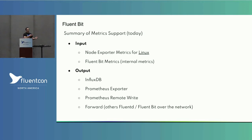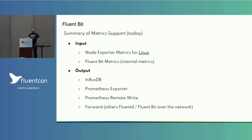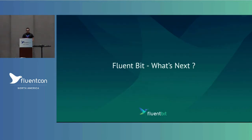All of this can now be routed out to InfluxDB, Prometheus exporter, and Prometheus remote write. You can also forward these metrics to other agents if you want some kind of high availability. So if you were using node exporter and sending metrics to be scraped by Prometheus, you can now export them through Prometheus or send them to a different backend database using the same interfaces.